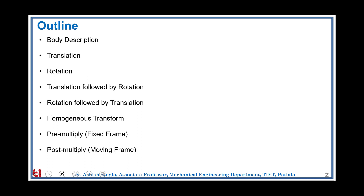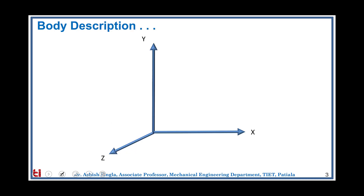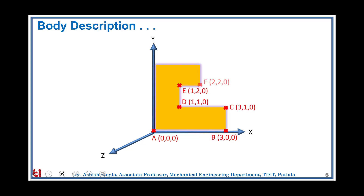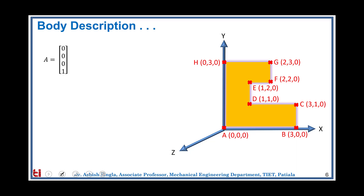In the last session we discussed rotation and translation, or in general the homogeneous transform on a point, which we will now extend to a body. We will use the standard universal coordinate system with three mutually perpendicular axes x, y, and z. This is a planar body having points A (0,0,0), B, C, D, E, F, G, and H. The fourth entry in each point's coordinates represents the mapping with respect to the homogeneous transform.